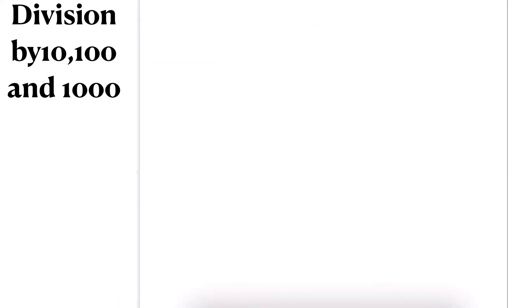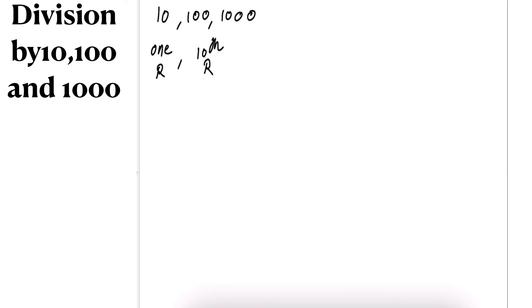Now let's do division with 10, 100, and 1000. There is a pattern: if we divide by 10, the ones digit will be the remainder and the rest of the number will be the quotient. If we divide by 100, the number from the tens position onwards will be the remainder and the rest will be the quotient. If we divide by 1000, the number from the hundreds position will be the remainder.